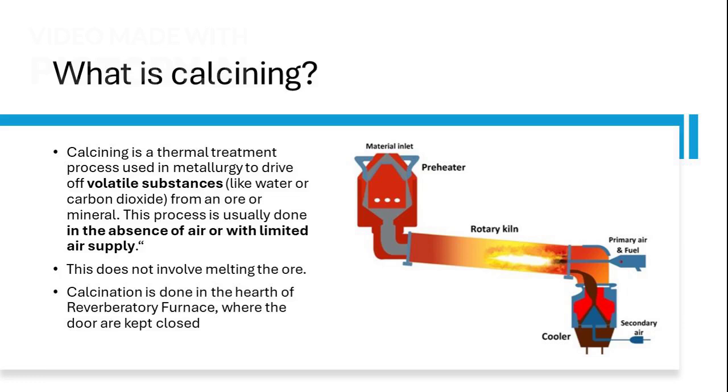Calcining is a thermal treatment process used in metallurgy to drive off volatile substances from ores or minerals. Unlike melting, calcination occurs in the absence of air, often in a closed environment like the hearth of a reverberatory furnace.